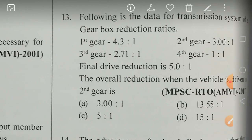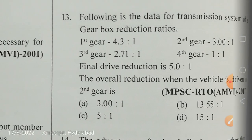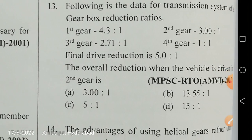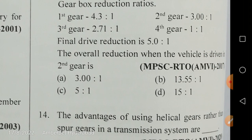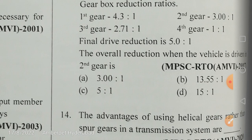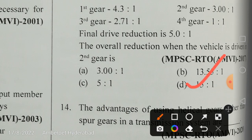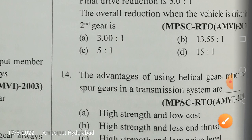Given transmission data: first gear 4.3:1, second gear 3:1, third gear 2.71:1, fourth gear 1:1, and final drive reduction 5:1. The overall reduction when the vehicle is driven in second gear is simply the product of the second gear ratio and the final drive reduction: 3 × 5 = 15. So D, 15, is the correct answer.